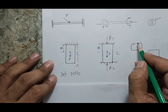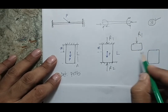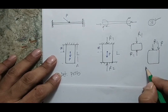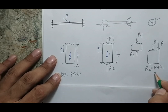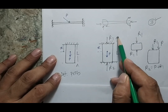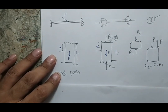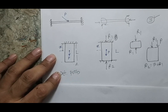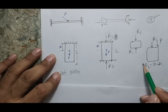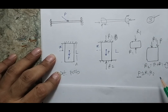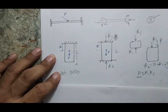Making the free body diagram: reaction R1 acts upward at the top, and R2 acts at the bottom. At the point of force application, the net internal force becomes P − R1. Balancing forces gives the equation: P = R1 + R2. However, this is only one equation with two unknowns R1 and R2. Therefore, we cannot solve for both unknowns using this single equation — the problem is statically indeterminate.